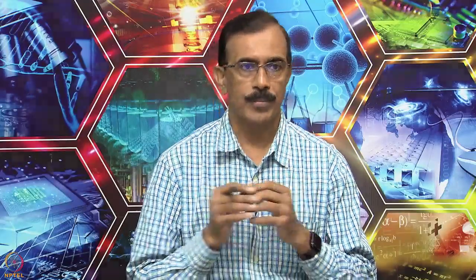Ultraviolet spectroscopy involves the measurement of absorption of light in the visible as well as the ultraviolet region. The visible region is 400 to 800 nanometers whereas the UV region is around 200 to 400 nanometers. This essentially involves the absorption of light by the substance under investigation. Since the absorption of light involves the transition from one electronic level to another, that means an electronic transition, UV spectroscopy is also known as electronic spectroscopy. To record the UV spectrum, the given compound is dissolved in a suitable solvent and the solution is placed in a quartz cell of path length 1 centimeter.